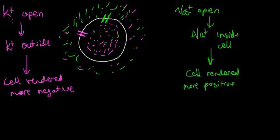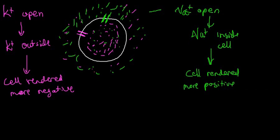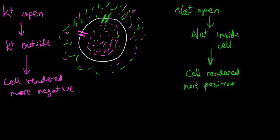Let me start with a little clarification. Here we have a diagram where in green we have sodium, and we can see there's a lot of sodium outside of the cell and way less inside. For pink, which is potassium, there's plenty of potassium inside the cell but not so much outside.